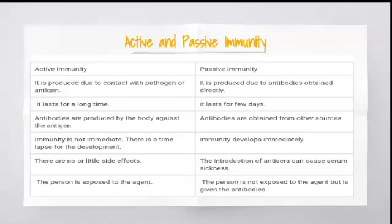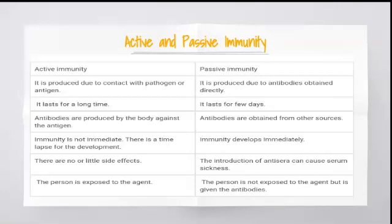In active immunity, antibodies are produced by the body against the antigen, whereas in passive immunity antibodies are obtained from other sources or other species. Active immunity is not immediate whereas immediate development of immunity happens in passive immunity.